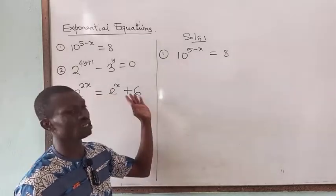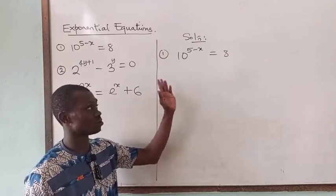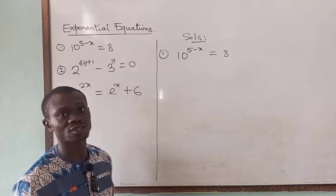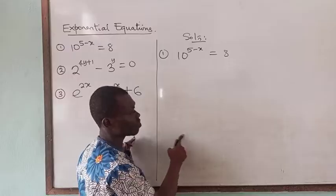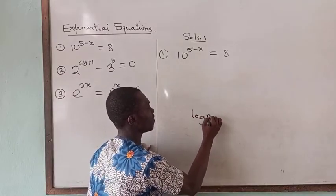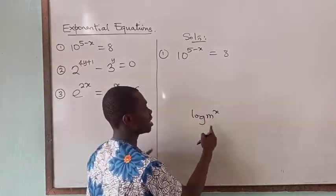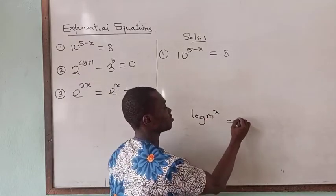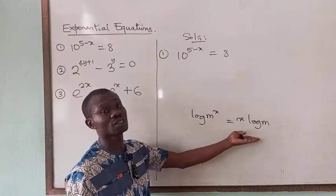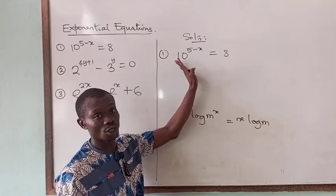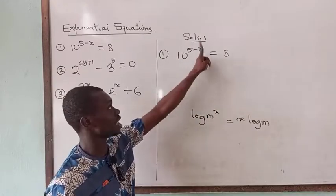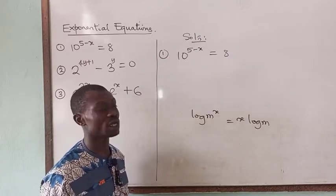To solve this kind of problem, you would have to involve logarithm. When you take the logarithm of both sides, it gives you the opportunity to resolve this problem and get the solution. Remember that one of the laws of logarithm states that if you have the logarithm of a number m raised to the power of x, you can write this as x times log m. It is this law that allows us to take the log of both sides and bring down the exponent to solve for x.